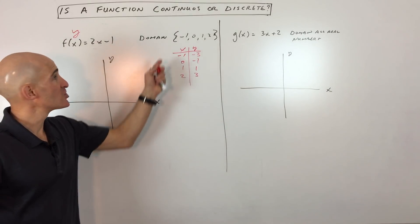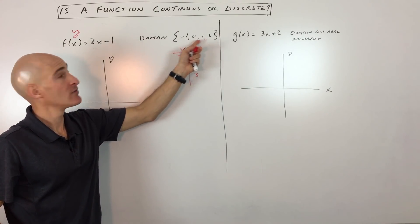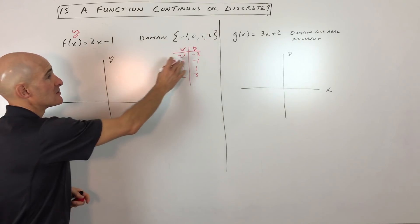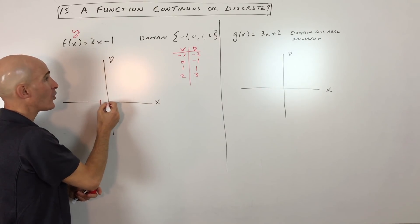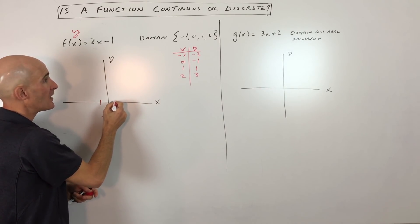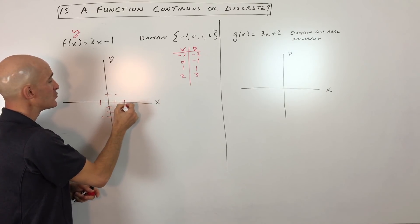Now because the domain is just these particular values, we're just going to plot these particular points. So we have negative 1, negative 3. So right there, 0, negative 1, 1, 1, and 2, 3. So you can see it's just these points.